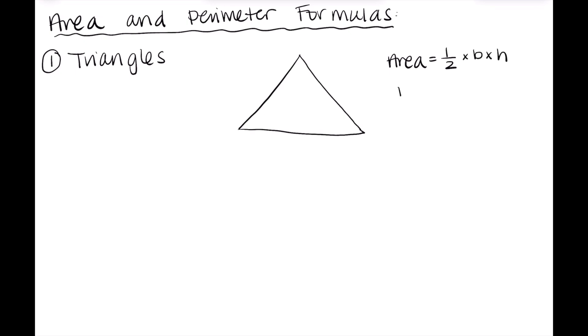But the equation for the area of a triangle is one half, which is a fraction, times b times h. And b, all that stands for is base, and h stands for height. So it is one half times the base of the triangle times the height of the triangle.